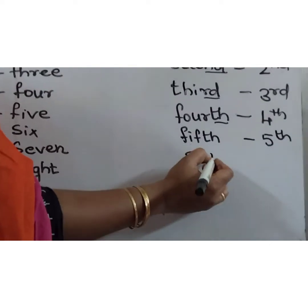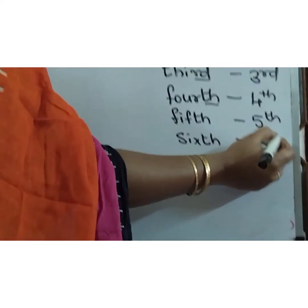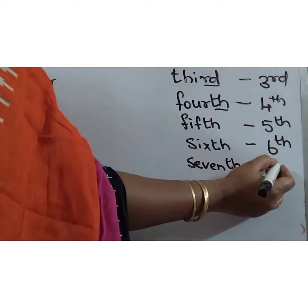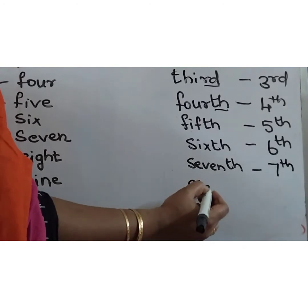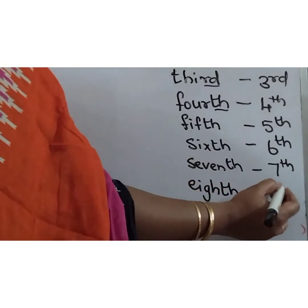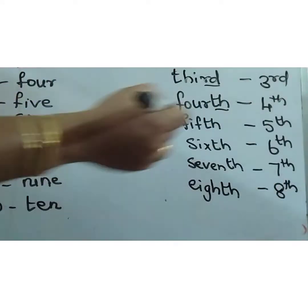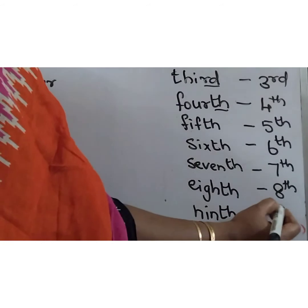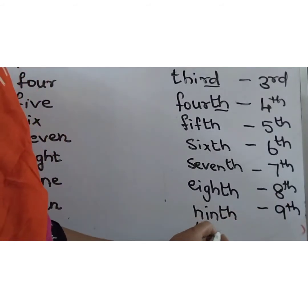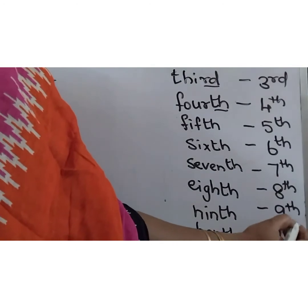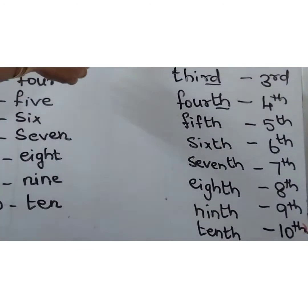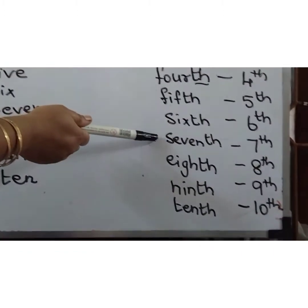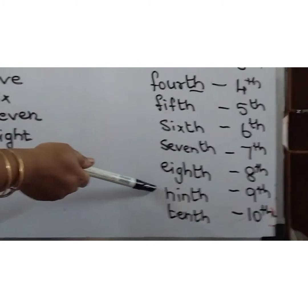Sixth — S-I-X-T-H. Seventh — S-E-V-E-N-T-H. Eighth — E-I-G-H-T-H. Ninth — N-I-N-T-H. Tenth — T-E-N-T-H. First, second, third, fourth, fifth, sixth, seventh, eighth, ninth, tenth.